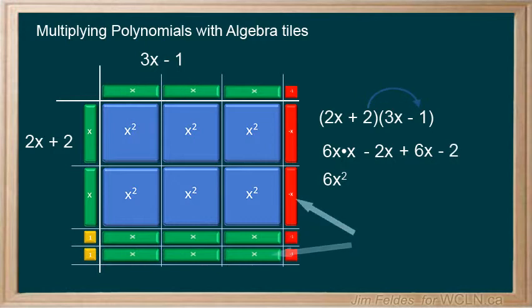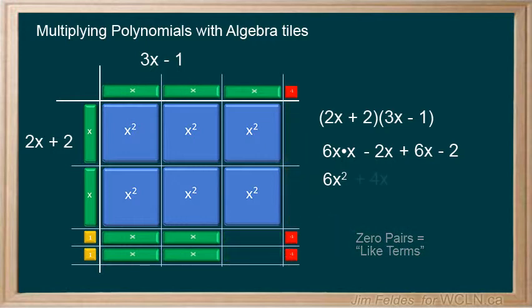Since we have negative and positive x's, we can match them as zero pairs, as they are of course like terms. And we are left with positive 4x. Again, our tile solution and distribution solution are consistent.